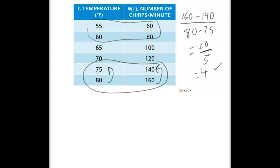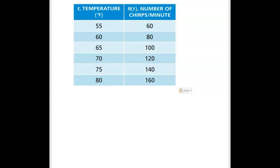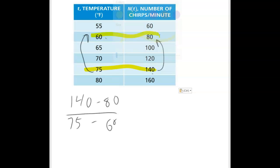It should hold for every pair of points, and they don't even need to be next to each other. I'm going to highlight two points, the 80-60 and the 140-75. They're not right next to each other. Let's see what we get for a slope here. I'm going to do 140 minus 80 for my change in the output. You have to do the output on top of the ratio.